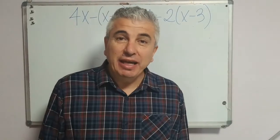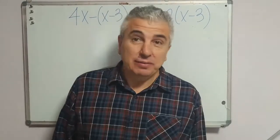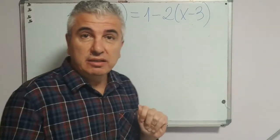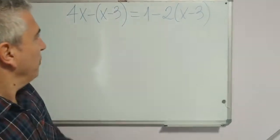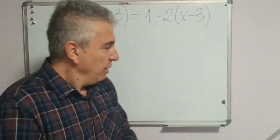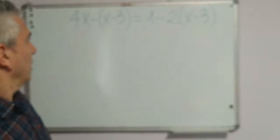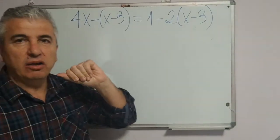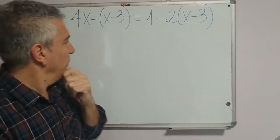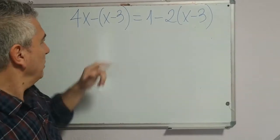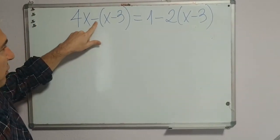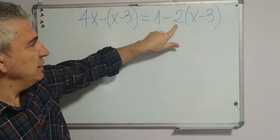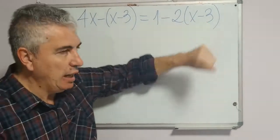Hello, here we are again. Today we are going to solve this equation with brackets. It has new things — for example, you have here a negative sign before the bracket, and here you have negative 2 times a bracket. You have to pay attention to this and mind the sign.